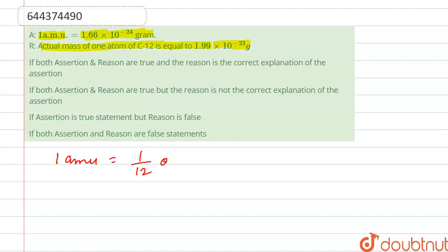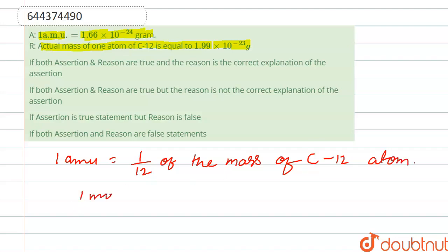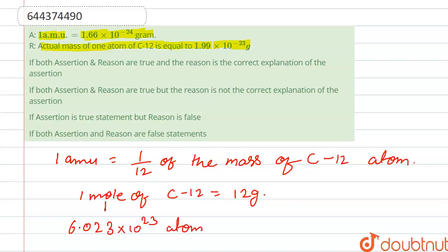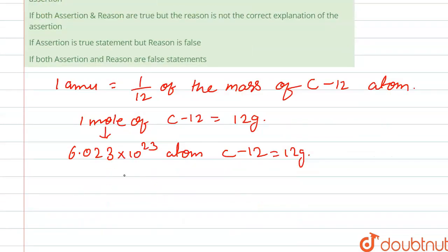1 amu is equal to 1/12th of the mass of one carbon-12 atom. Now, one mole of C-12, that is carbon-12, contains 12 grams. And in one mole, the number of atoms is equal to 6.023 × 10²³ atoms. So one atom of C-12 contains — we calculate from this.